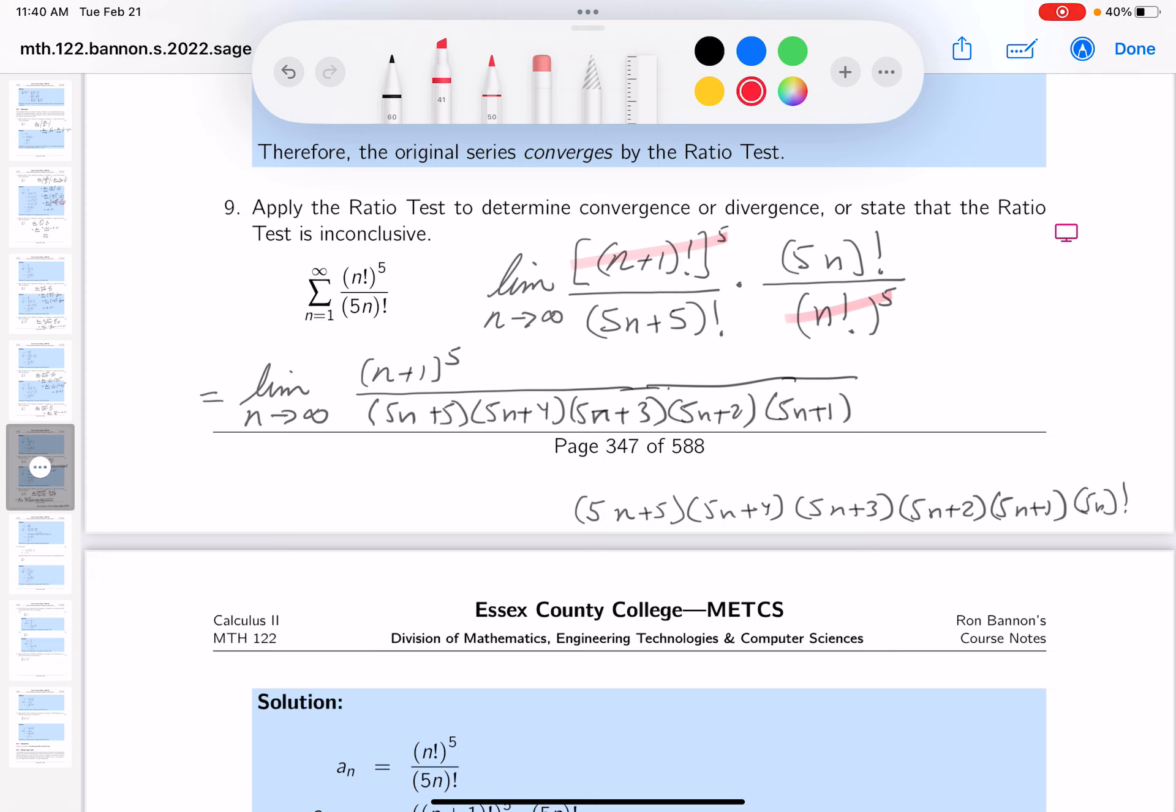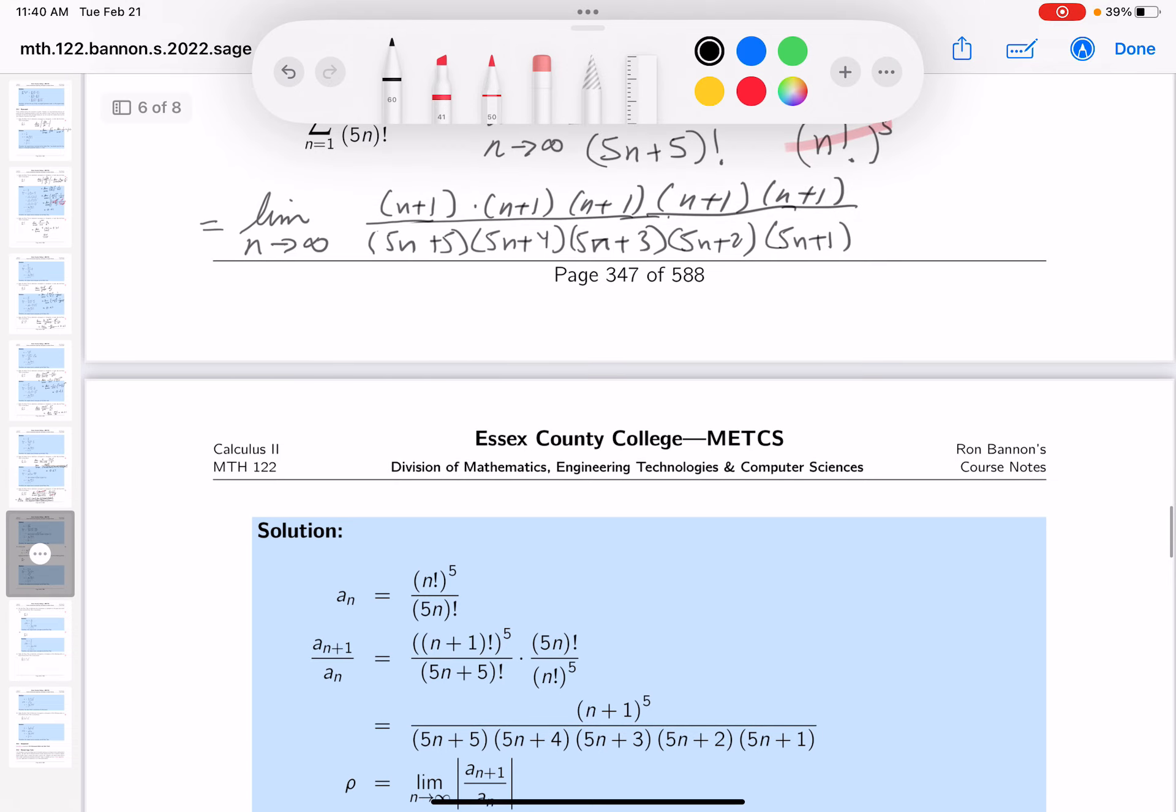All right. I'm going to erase this. I don't need that anymore. And the top I'm going to write a little differently. I'm going to write (n+1) down 5 times. I'm not going to multiply it out, of course.